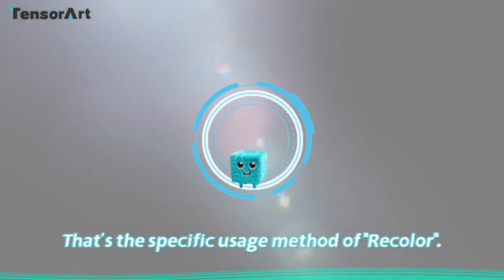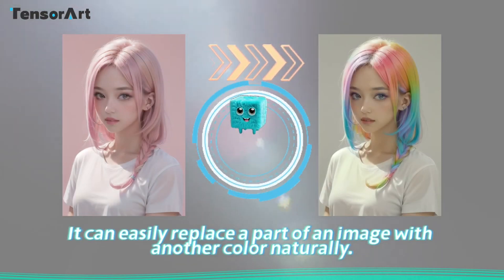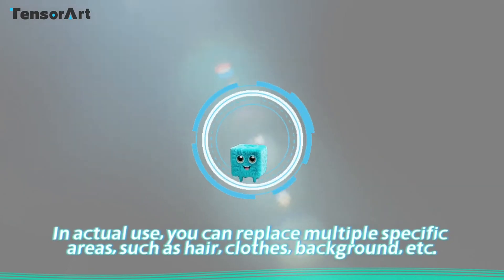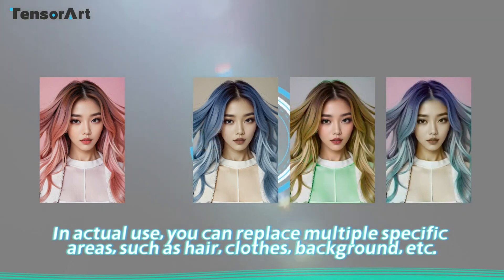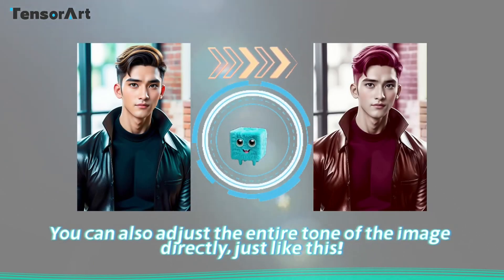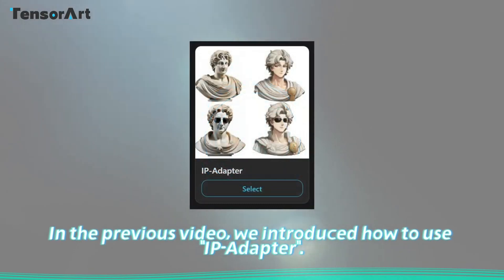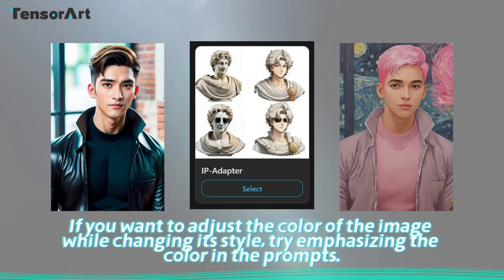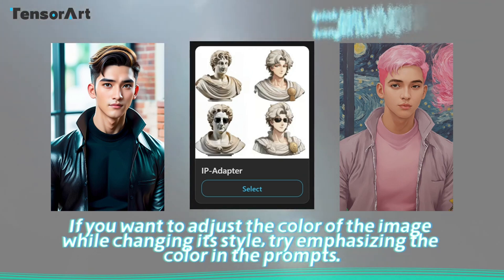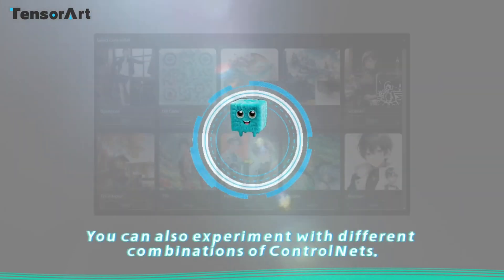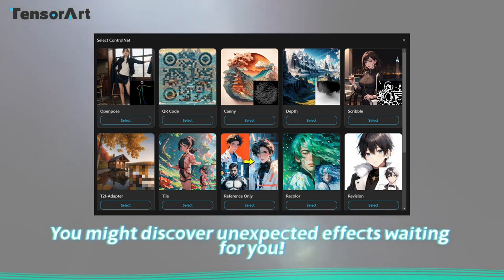That's the specific usage of Recolor — it can easily replace a part of an image with another color naturally. In actual use, you can replace multiple specific areas such as hair, clothes, and background. You can also adjust the entire tone of the image directly. If you want to adjust the color of the image while changing its style, try emphasizing the color in the prompt — it will also yield good results. You can also experiment with different combinations of ControlNets and discover unexpected effects.